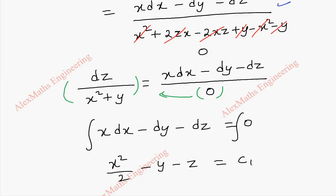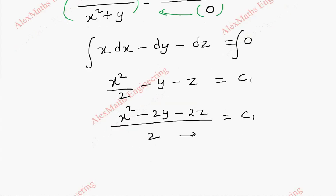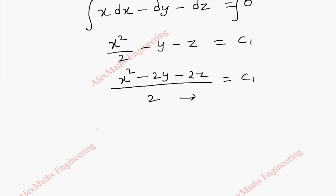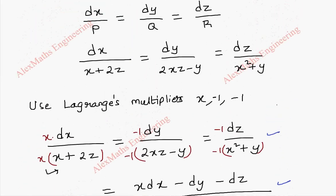Taking LCM as 2: x² - 2y - 2z = 2c₁, which equals constant a. So the first part of the solution is x² - 2y - 2z = a. Now to get the other part of the solution we have to choose another set of multipliers.